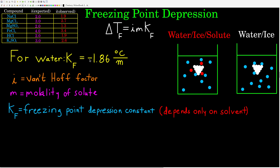Notice the negative sign on Kf. The convention we will use is that all freezing point depression constants will be negative, which gives a negative delta Tf — that's what always happens. Some textbooks use positive Kf values with a negative sign in the equation; others expect you to know the result is negative. All Kf values here will be negative.